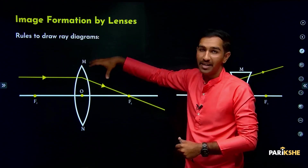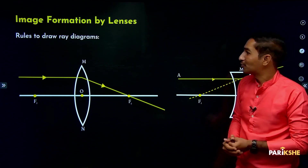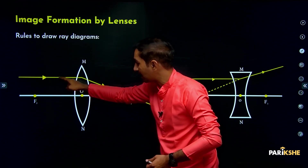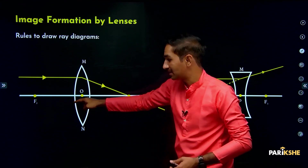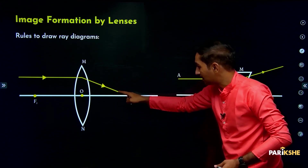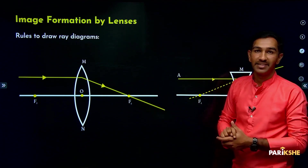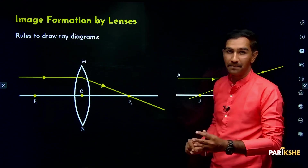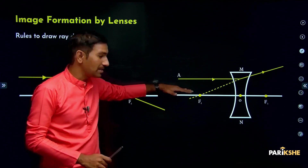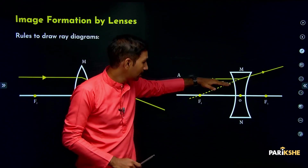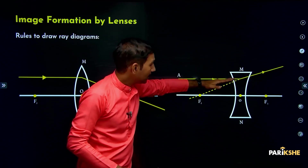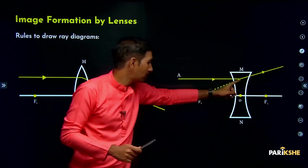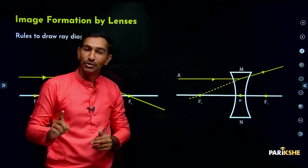Rules to draw ray diagrams. When the incident ray is parallel to the principal axis, it gets refracted and meets the focus F2 — that is for a convex lens. For a concave lens, when the incident ray is parallel to the principal axis, after refraction the refracted ray appears to be coming from the focus F1. This is our first rule.